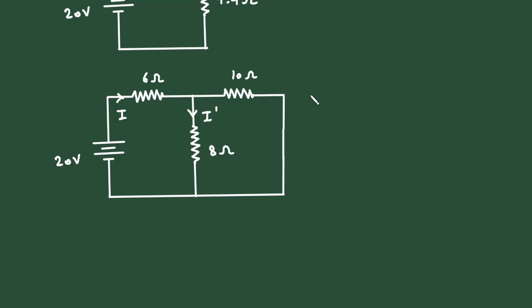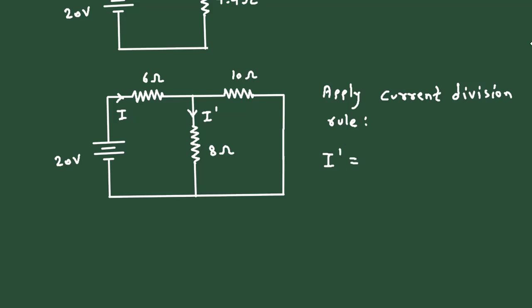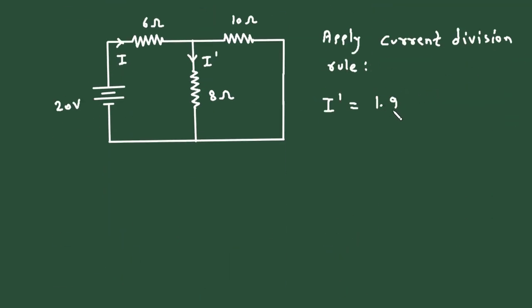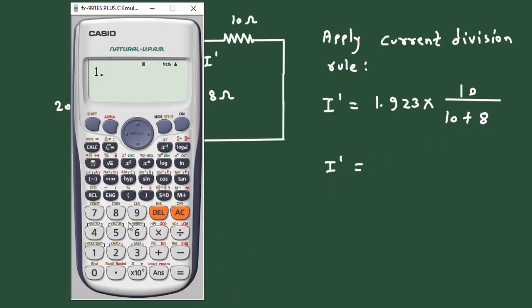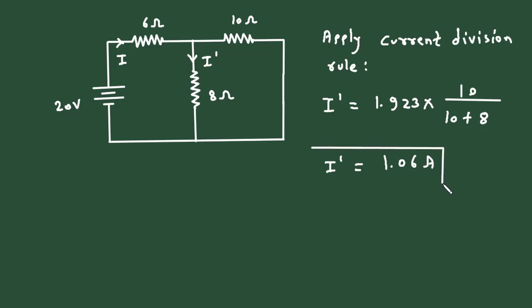Apply the current division rule. I prime equals the total current 1.923 multiplied by the opposite branch resistance. The parallel branch to the 8 Ohm is 10 Ohm, so: I prime = 1.923 × 10 divided by (10 + 8), which gives 1.06 ampere. The direction of this current is downward.